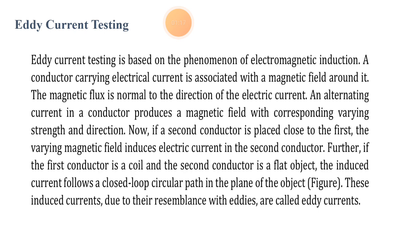If a second conductor is placed close to the first, the varying magnetic field induces electrical current in the second conductor. Further, if the first conductor is a coil and the second conductor is a flat object, the induced current follows a closed loop circular path in the plane of the object, as shown in the figure on the next page. These induced currents are called eddy currents.